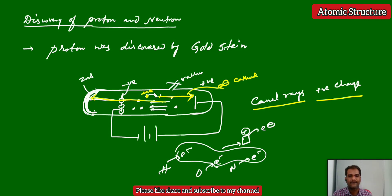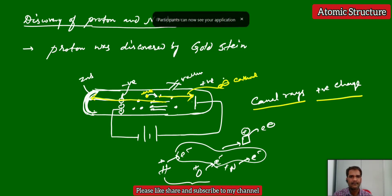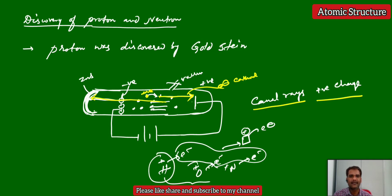But canal rays depend on the gas used. For example, if an electron is emitted from hydrogen, then hydrogen gets a positive charge — the smallest, lightest particle in these canal rays is called the proton. Oxygen and nitrogen also carry positive charge, but the H⁺, O⁺, and N⁺ ions are not the same. Electrons are the same whatever the source, but the canal rays are different because they depend on the gas. The nature of canal rays depends on the nature of the gas taken in the discharge tube.